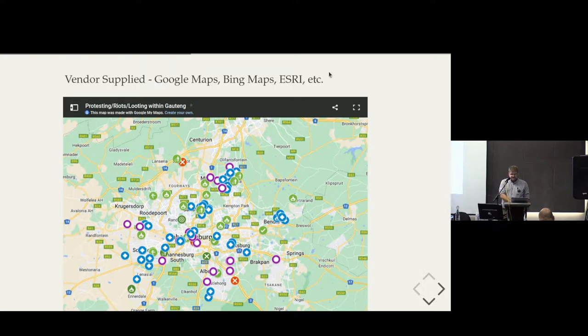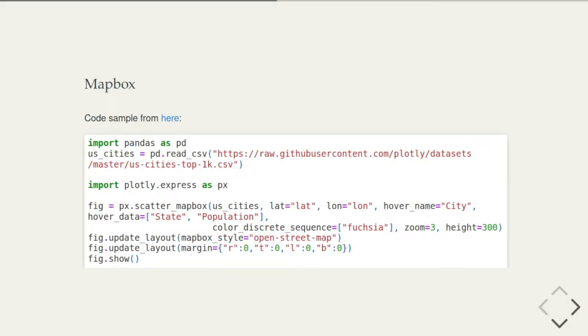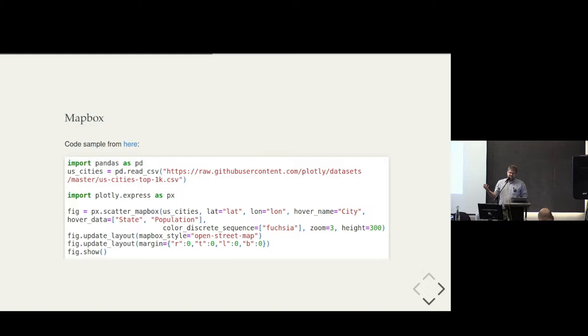This is one route you can go, and there are programmatic ways too — there's a Python SDK for Google Maps. Then there's Mapbox, which is very popular. They're strictly speaking a mapping data provider, but there's lots of tooling. Probably the most common way I've seen people use the Mapbox tooling is with a plotting library called Plotly.